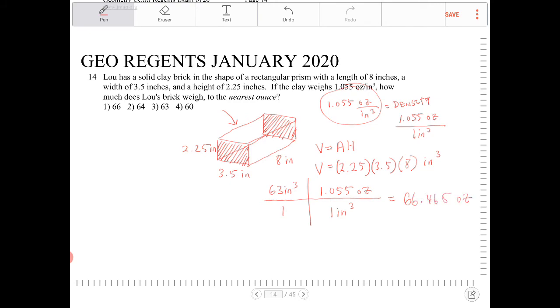But the answer says to round to the nearest ounce, so that would give me 66 because when you round, you always round when it's 0.5 or more, you always round up. Since we have something under 0.5, we're going to round down. So this is going to be 66.